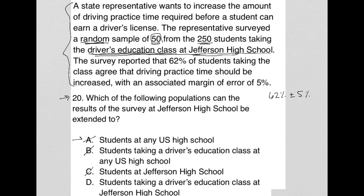Choice D says 'students taking a driver's education class at Jefferson High School.' That is definitely the correct answer. Because if this was a truly random sample, we should be able to trust that the survey results are reflective of the population from which the sample was taken — and that population was the 250 students taking the driver's education class at Jefferson High School. So choice D is the correct answer.